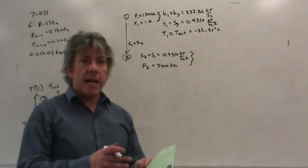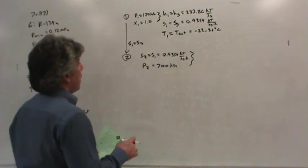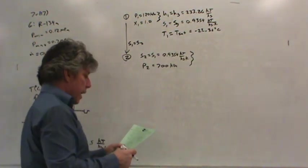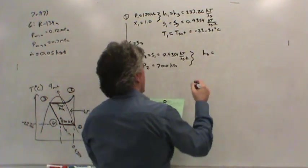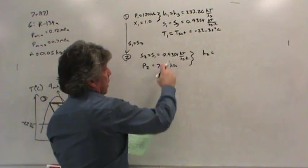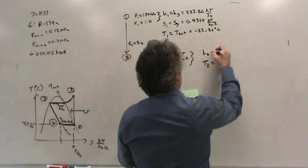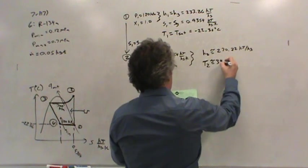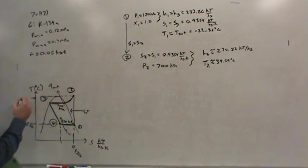The gas is more random as its temperature goes up, as it goes into the superheated region. We need to go to the superheated tables to find the properties. We have to interpolate. When you do it, you're going to use the entropy in state two and interpolate to come up with the enthalpy and temperature. I came up with about 270.22 kilojoules per kilogram for enthalpy and 34.59 degrees Celsius for temperature.